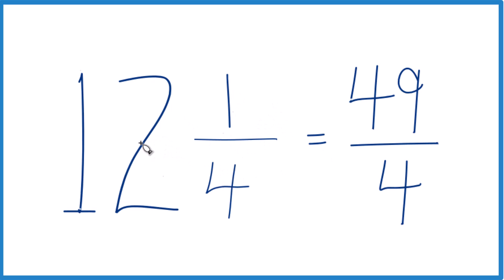Let's do it again. 12 times 4 is 48. 48 plus 1, that's 49. That's our numerator. Bring that 4 across there, and you got it.